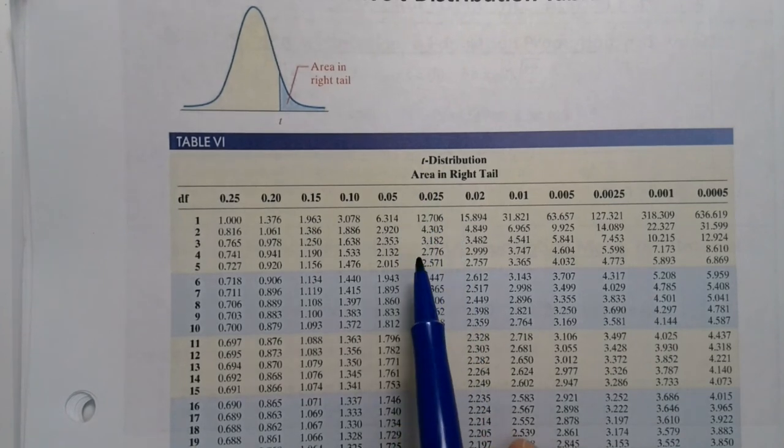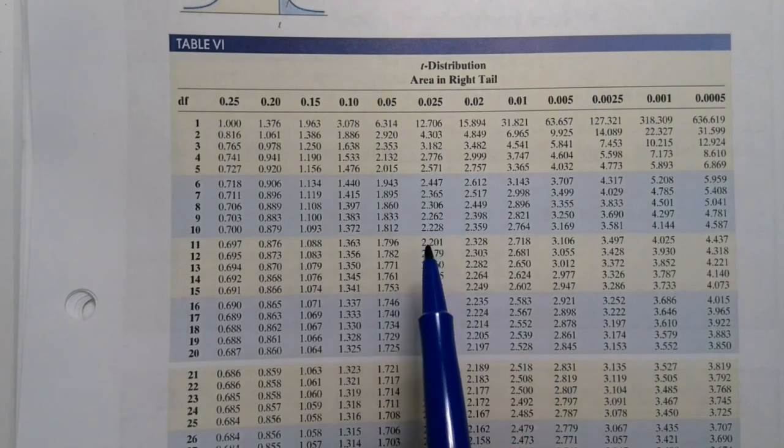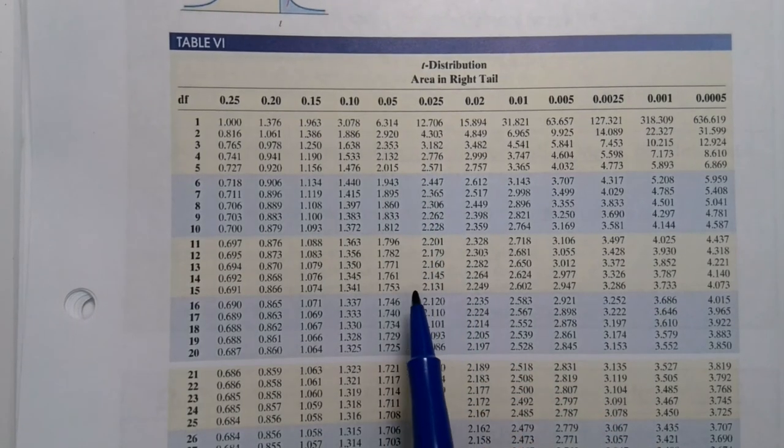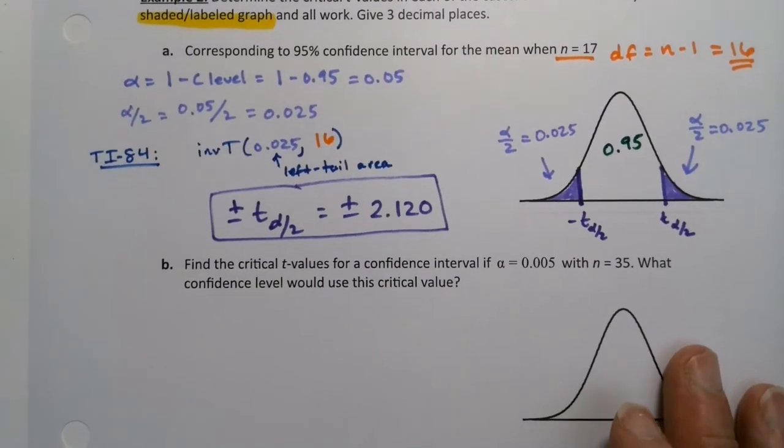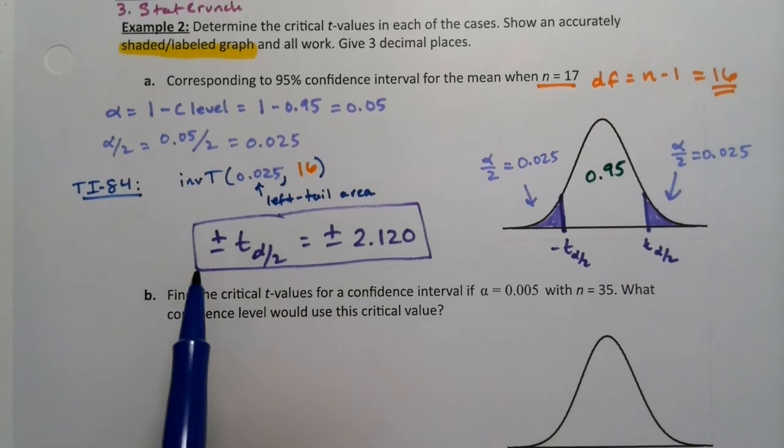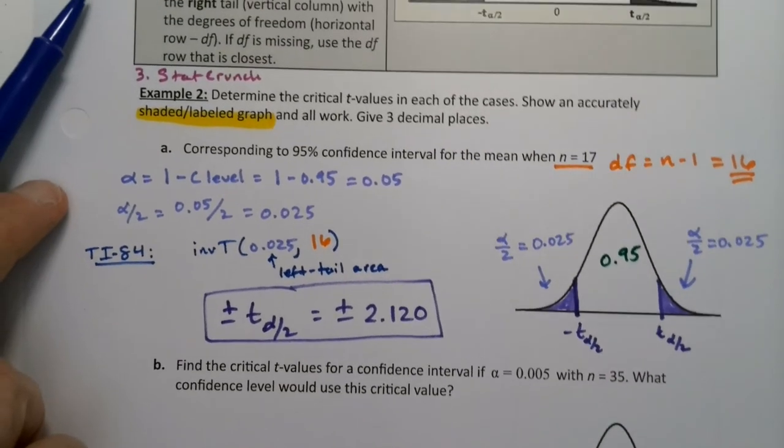So alpha over 2 is 0.025. So this is my column. And I go down until I get to 16 for my degrees of freedom. And there it is, 2.120. So whatever way you want to do it, if you want to use the table, that's fine. If you want to use inverse T, that's fine.